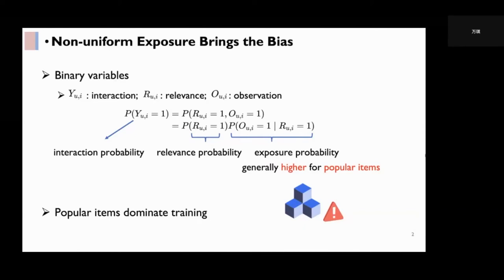Since the exposure probability is generally higher for popular items, they appear more frequently in observational data. And eventually, these popular items will dominate the model training and lead to the popularity bias.